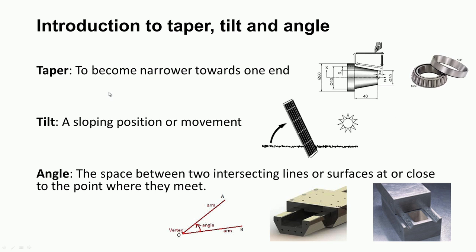In our daily life, we come across these terminologies. Taper means to become narrower towards one end. For example, a component has a length of 40 millimeters, and a diameter of 40 millimeters at one end; towards the other end, the diameter reduces to 30 millimeters. The size is getting narrower towards one end — such components are called tapered components.